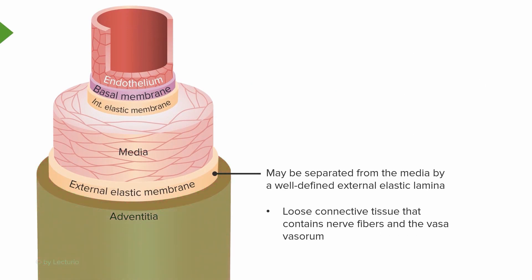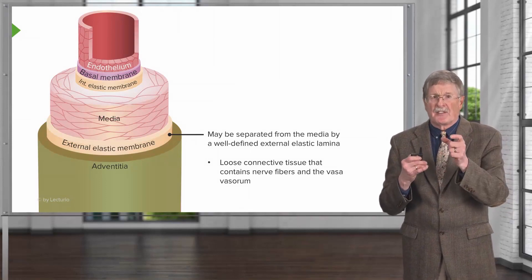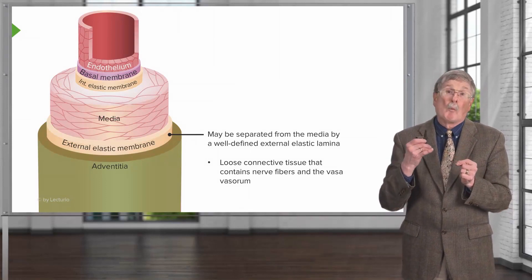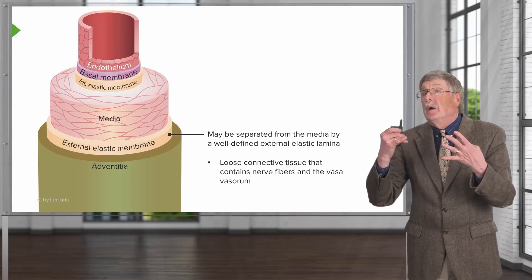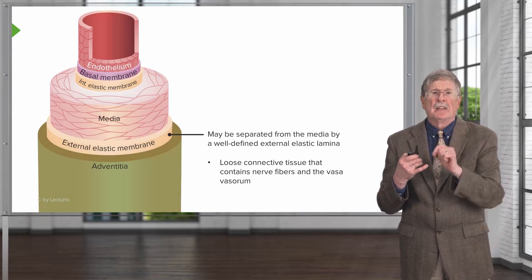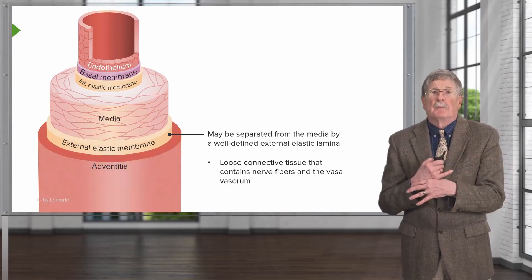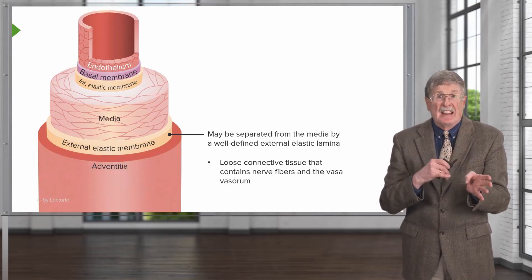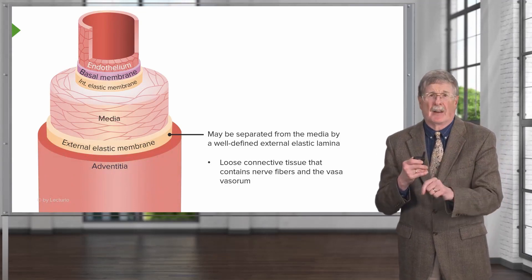Moving out to the adventitia: this contains nerve fibers and the vessels of the vasovasorum. Vasovasorum literally means the vessels of the vessel. Some arteries are so thick-walled that they need their own blood supply and cannot depend on diffusion just from the lumen. So we have vasovasorum vessels that perfuse those medial smooth muscle cells. We may also separate the media from the adventitia by an external elastic lamina, though that may not always be well-defined.